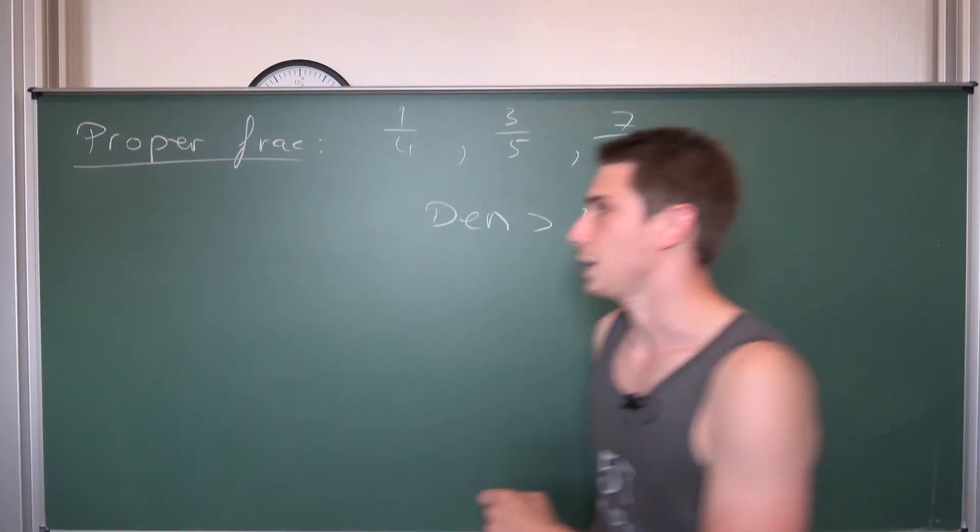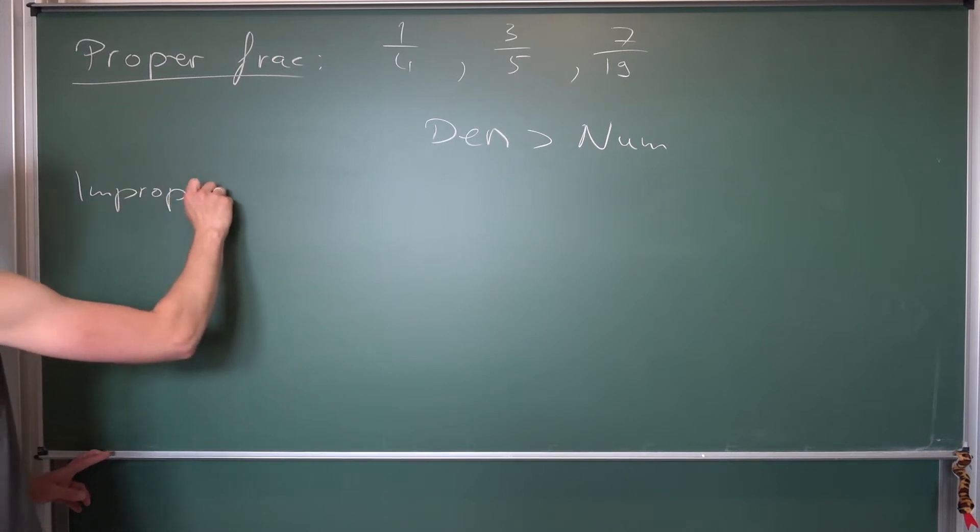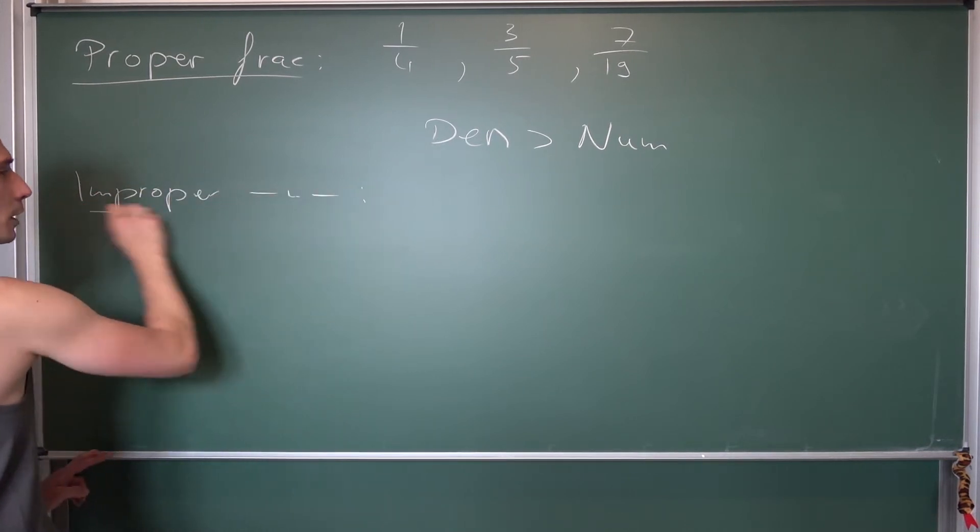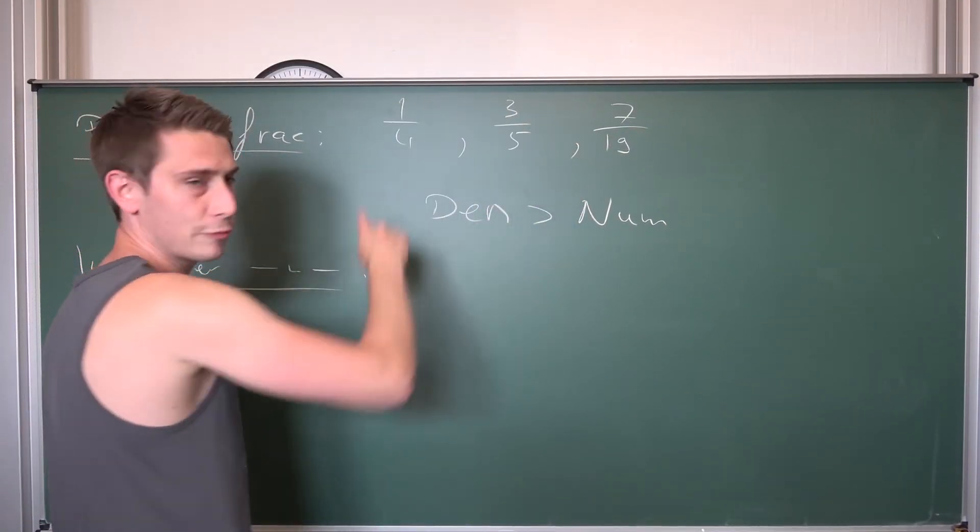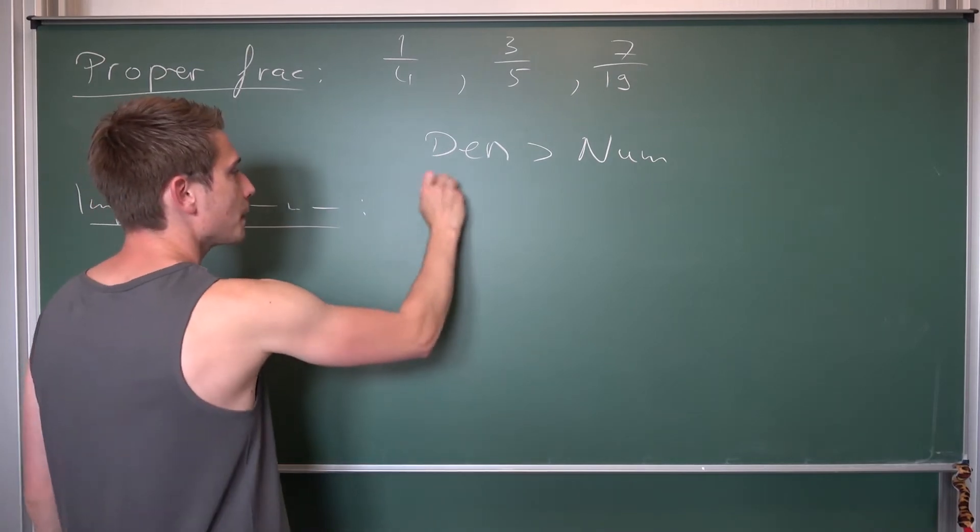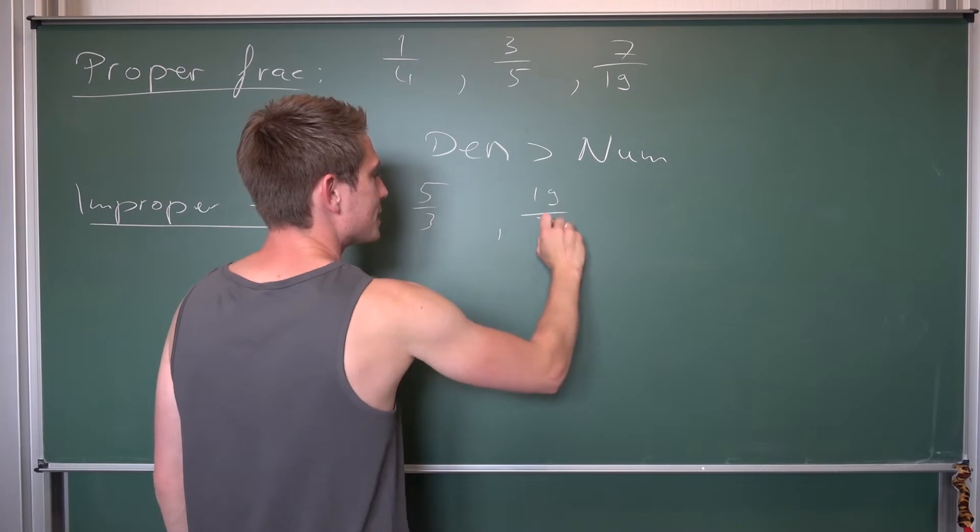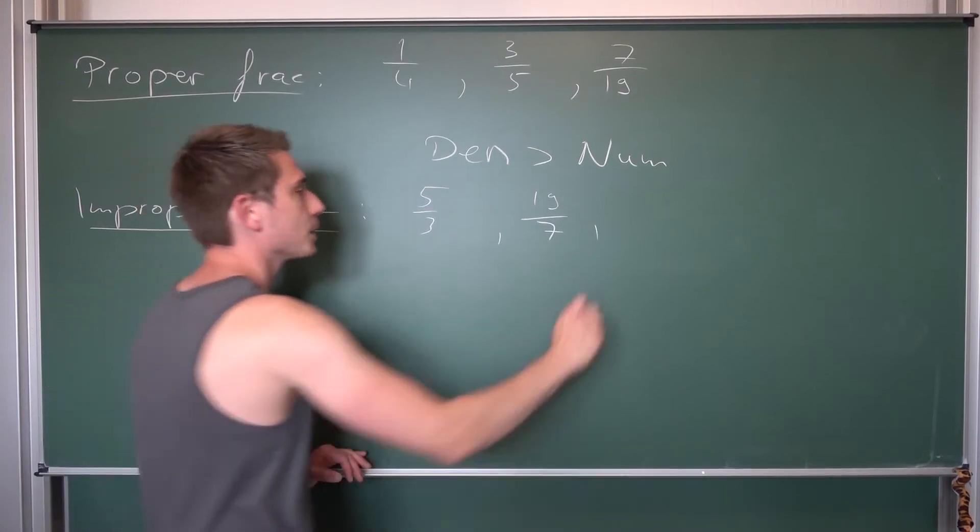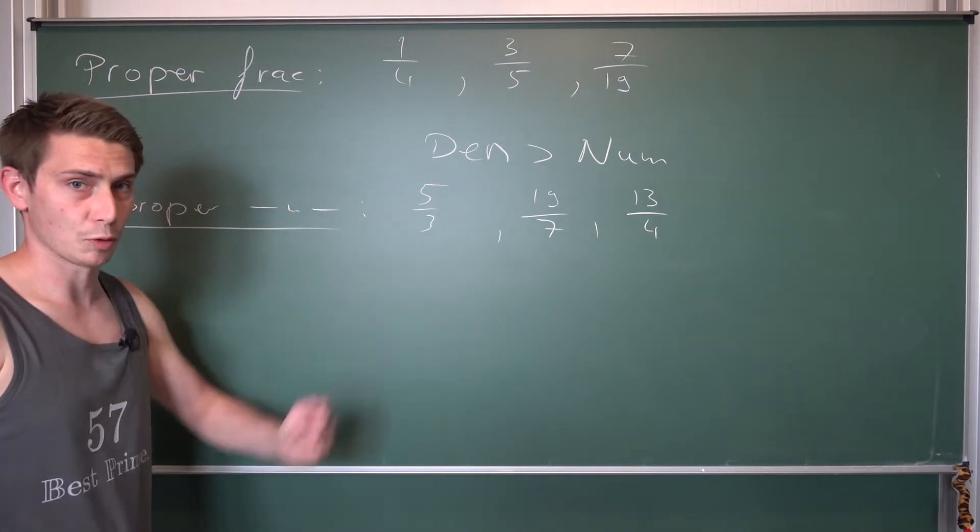What about improper fractions? Improper fractions have the property that they are basically the polar opposite of what we have here, namely an improper fraction could be 5 over 3, it could be 19 over 7, it could be 13 over 4. Those are all improper fractions.